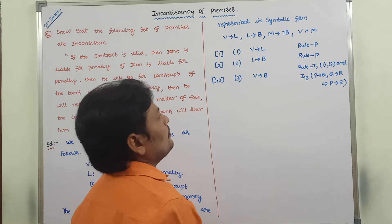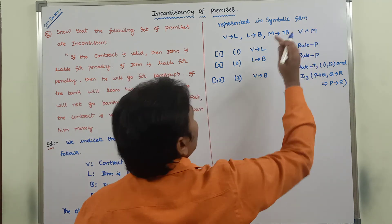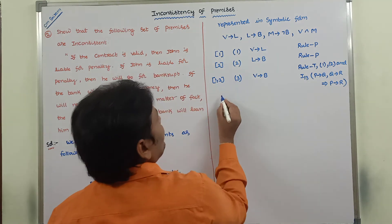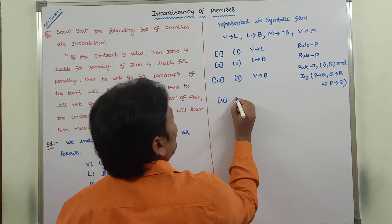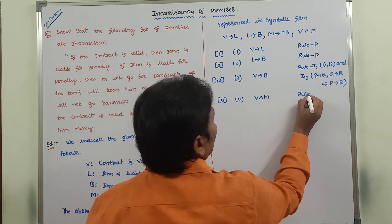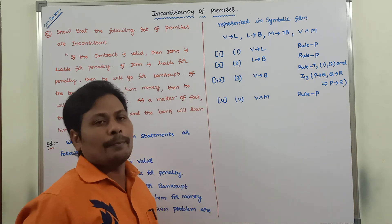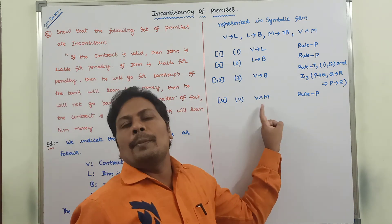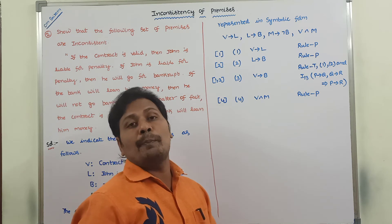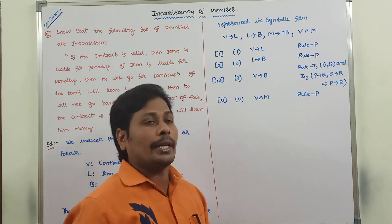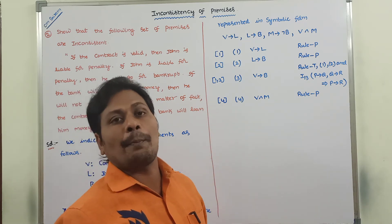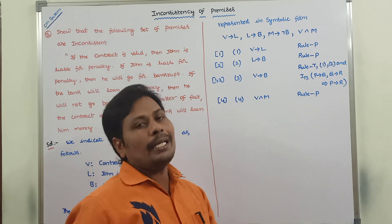Next, after completing the third step, we go to the fourth step. The fourth step introduces the premise V ∧ M into the derivation by using rule P. Now, V ∧ M can be split into V and M separately according to implication rules I1 and I2.